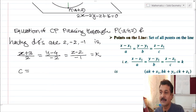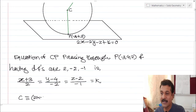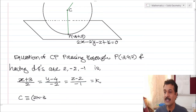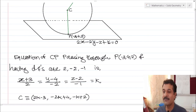So I can consider a point C — the centre of the sphere — in the form of k. I am getting the point C as (2k minus 3, minus 2k plus 4, minus k plus 2). This is the centre, but in the form of k. To find k, I need one more condition.